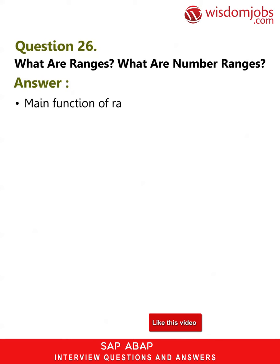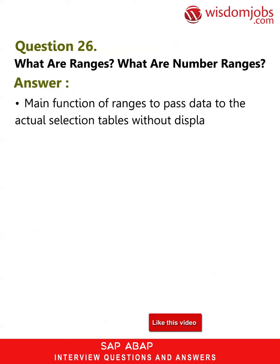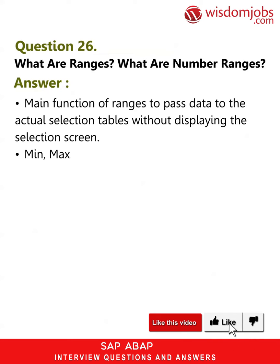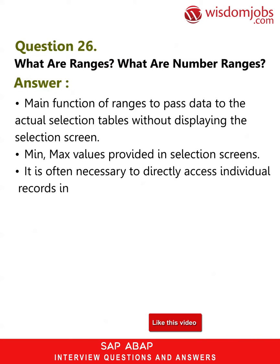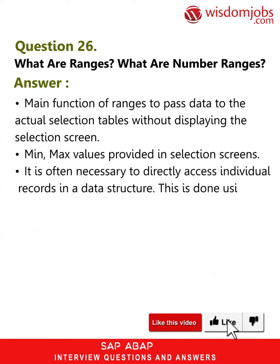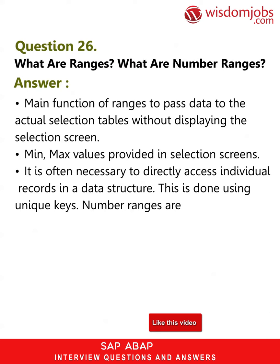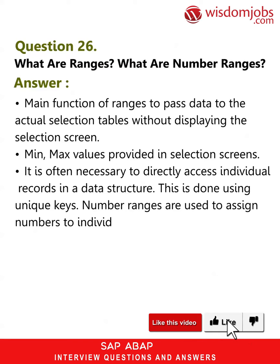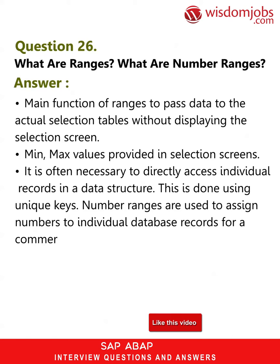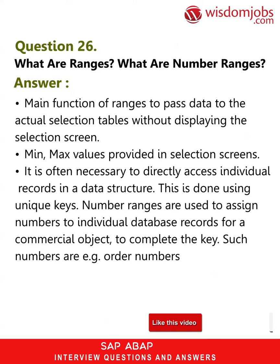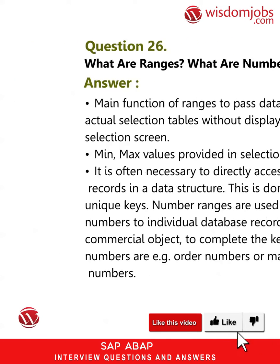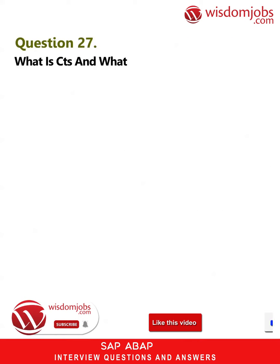Question 26: What are ranges and number ranges? The main function of ranges is to pass data to the actual selection tables without displaying the selection screen. Min and max values are provided in selection screens. It is often necessary to directly access individual records in a data structure using unique keys. Number ranges are used to assign numbers to individual database records for a commercial object to complete the key. Such numbers are, for example, order numbers or material master numbers.